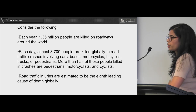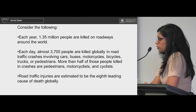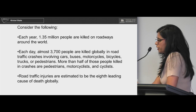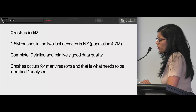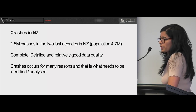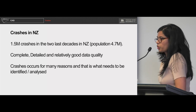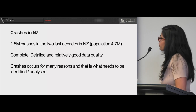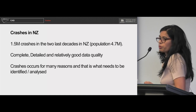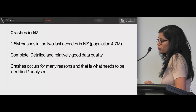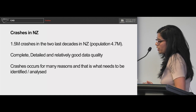Road traffic injuries leading to death are the eighth leading cause of death globally. Talking about New Zealand specifically, in a population of 4.7 million, we have around 1.5 million crashes. We have relatively good data with a lot of scope for playing around with that data and creating visualizations.